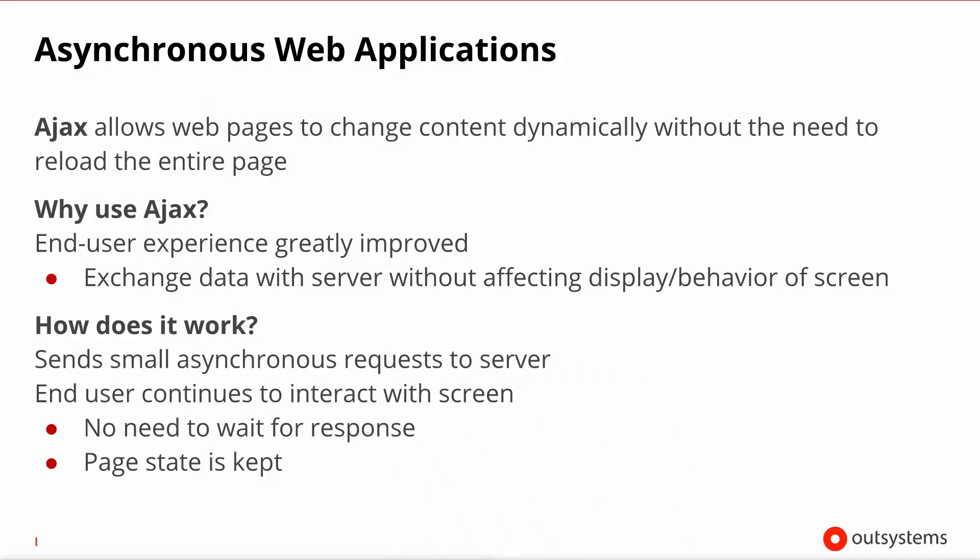In the screen interaction lesson we covered how the page behaves when we do a normal submit to it. To recap, all of the inputs are passed in the request to the page, the associated screen action is run, and when it reaches the end, statement execution cycles back to the preparation, runs it completely, and rebuilds the whole screen sending it back to the browser.